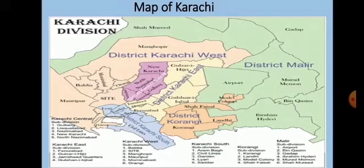What are the different divisions of Karachi? Karachi is further divided into different districts. For example, we have District Karachi West, District Malir, District Korangi, District Karachi South and District Karachi Central. This is extra information for you — it is not given in your book.